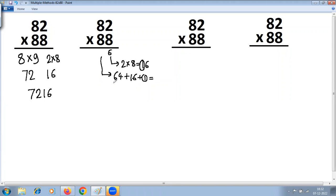64 plus 16 is 80, 80 plus 1 is 81, so you write 1, carry this 8 to next step. The third step or last step is multiply the digits at tens place: 8 multiplied by 8 is 64 plus this carry 8, 64 plus 8 is 72. So the answer is 7216, same as the first method.